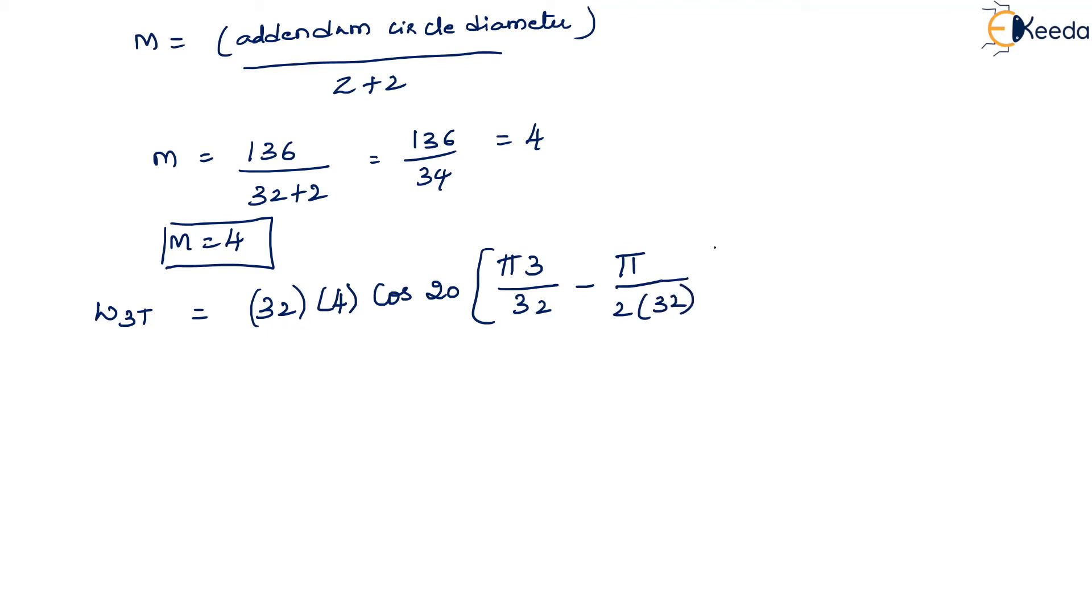Plus [tan of 20, that is the pressure angle, minus pi by 9], or we can write it as theta, that is 20. So after substitution of the values and simplification, we will get the value of this theoretical span width as 31.314 mm.